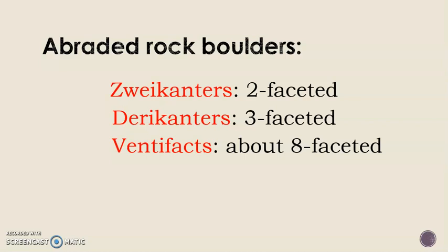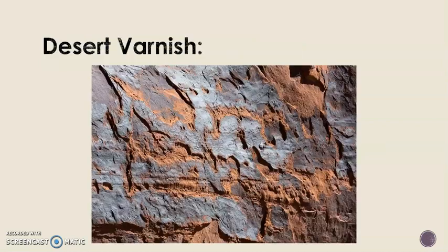Next, wind-abraded rock boulders. These are rock pieces that have been abraded for long periods and, based on the number of phases, are classified into dreikanter, dreikanter variants, and ventifacts. Moving on to desert varnish — a dark coating on rocks found in arid regions, made of fine grains of clay material composed of manganese oxide or iron oxide, often seen as a coating on canyon walls.